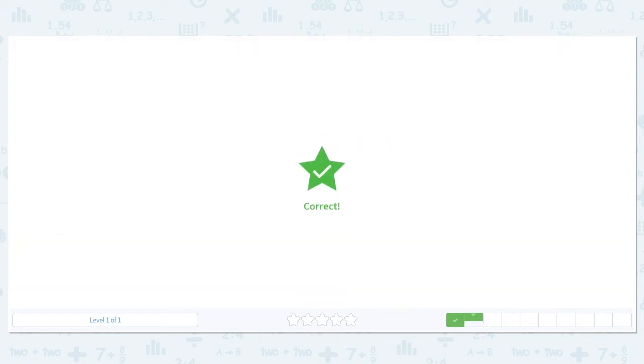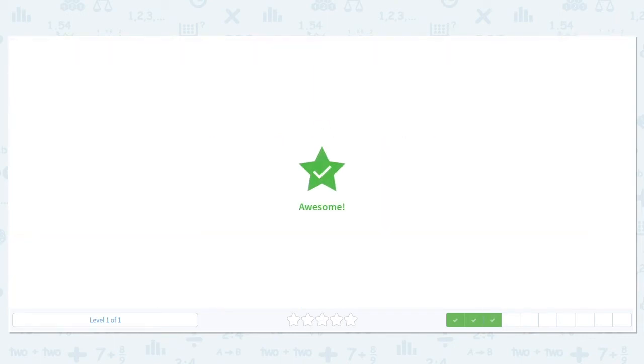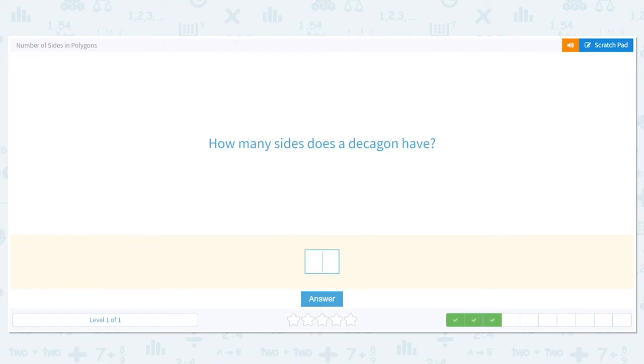We just did this one. How many sides does a nonagon have? Nine. How do we know this? What was the giveaway? Non equals nine. Good job. How about a decagon?